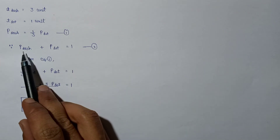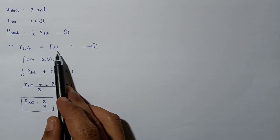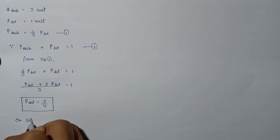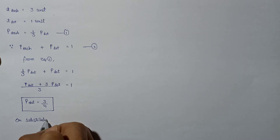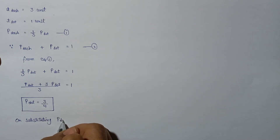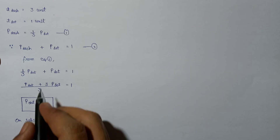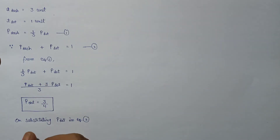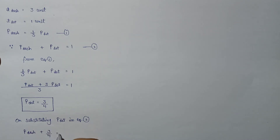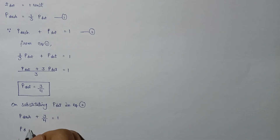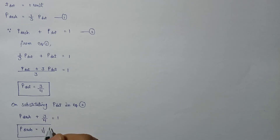Since P(dash) + P(dot) = 1, substituting P(dot) = 3/4, we get P(dash) = 1 - 3/4 = 1/4. So the probability of occurrence of dash is 1/4.